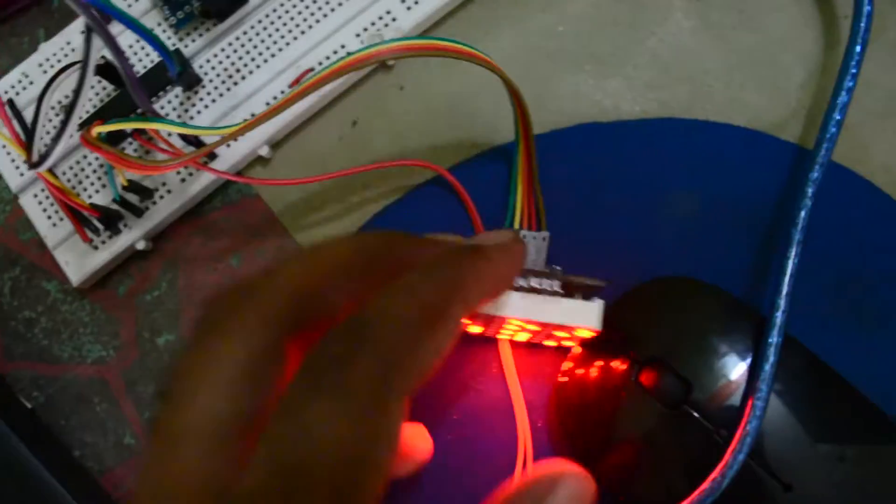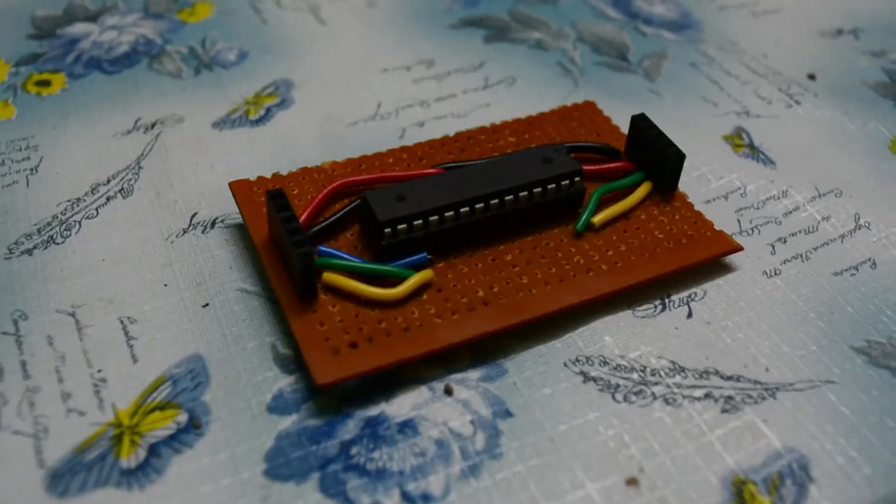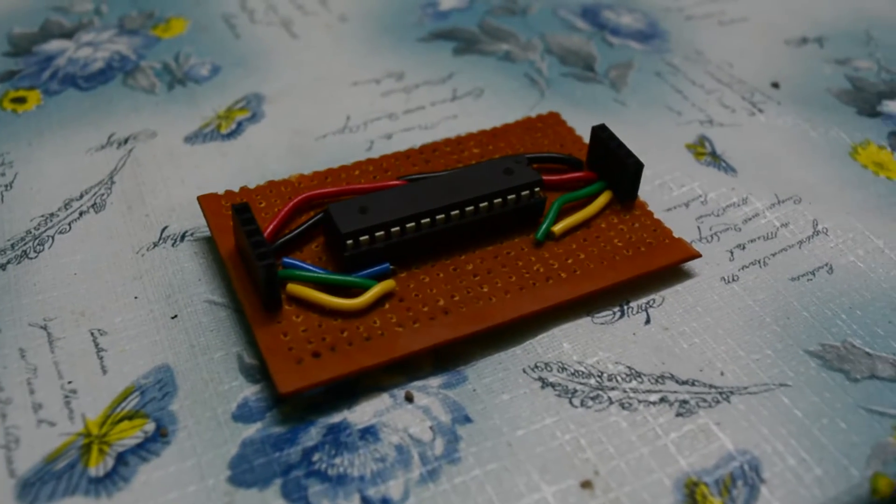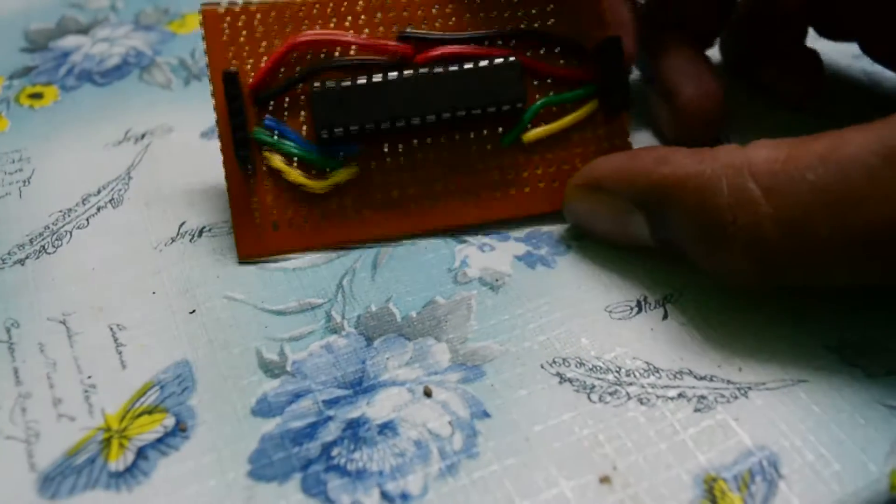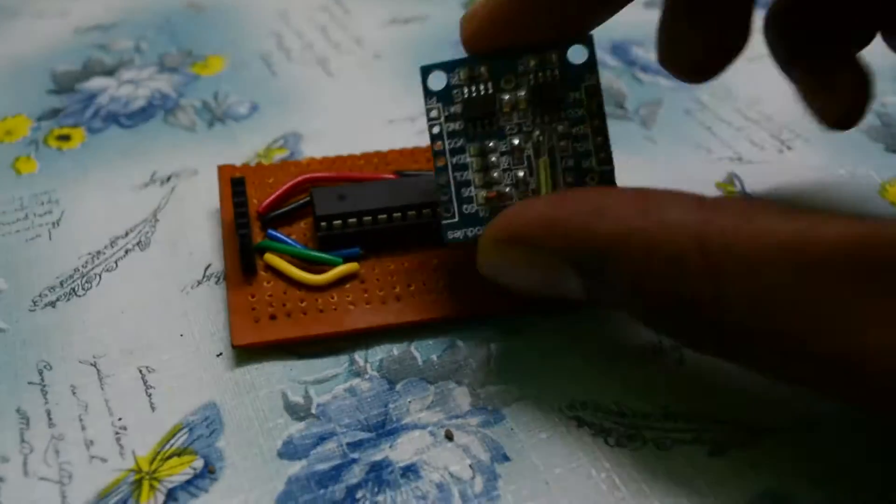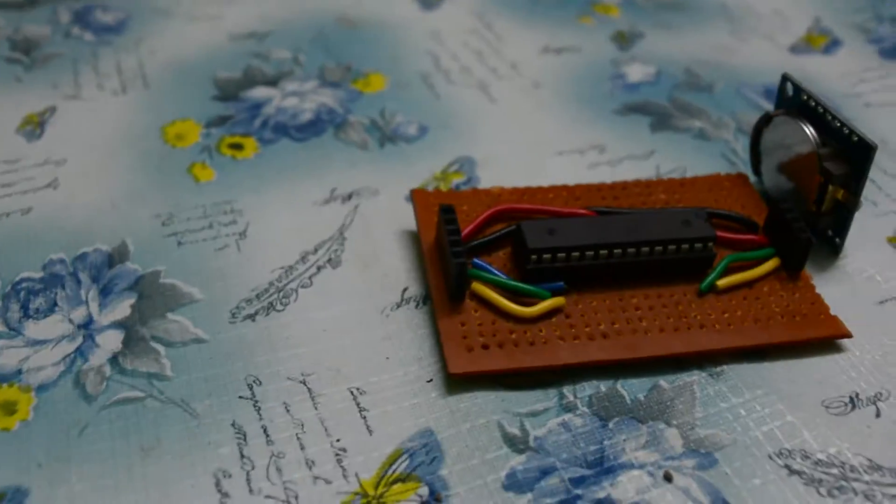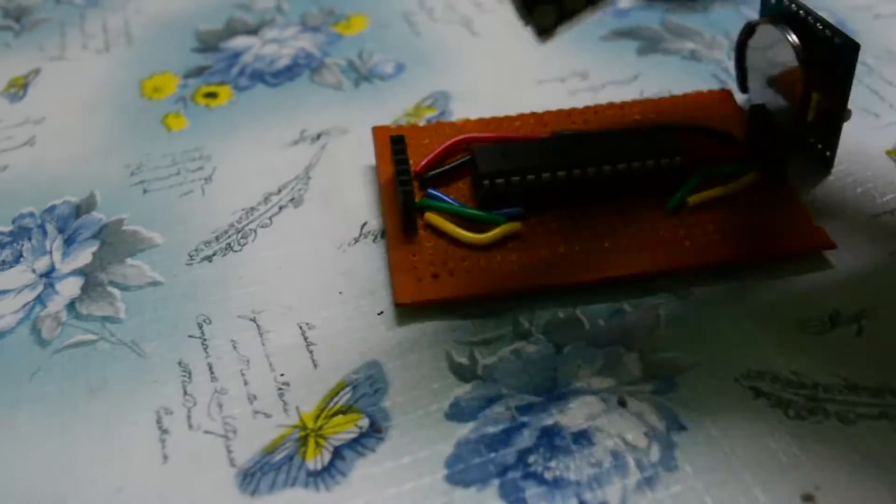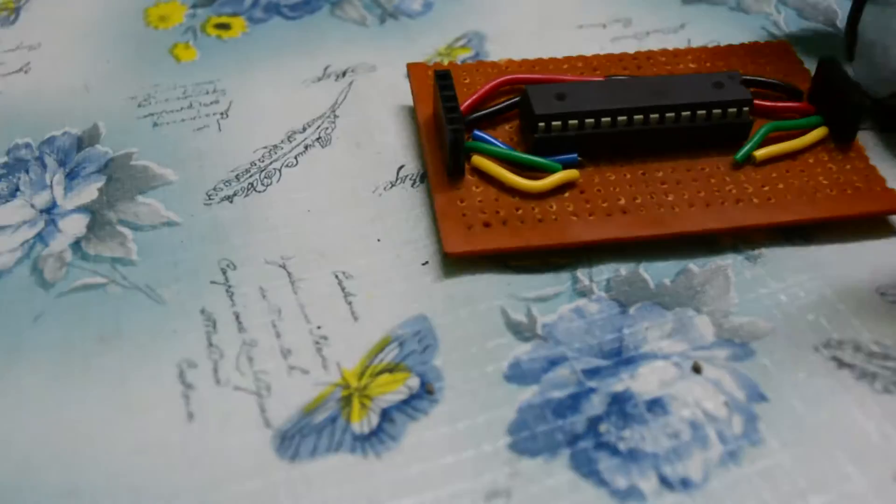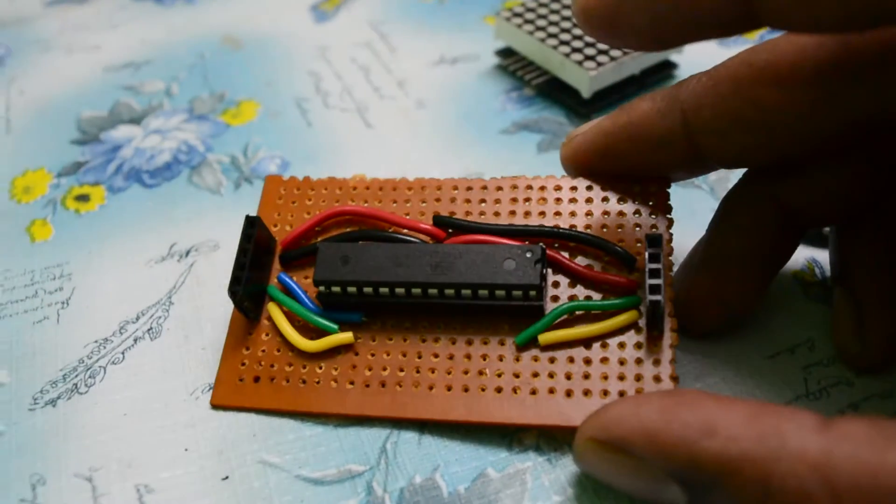So the next step would be to make this, get this on a more permanent setup. So I have got the board laid out here. The microcontroller would be here. The RTC would go into this pin. And the matrix would go here. So I will reconnect the wires. And let's solder now.